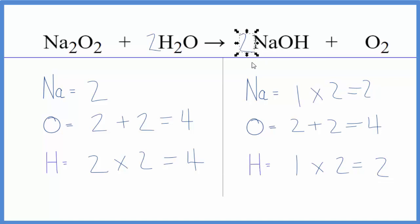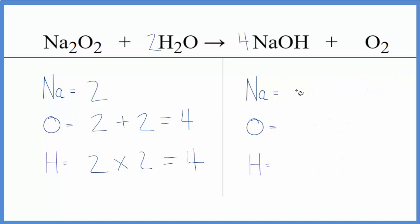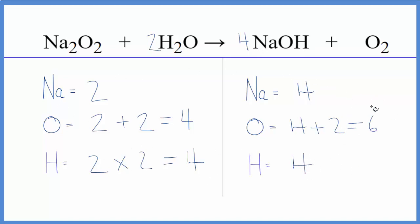So let's do that — put a four here — and now we need to update all of these numbers. We have four times one: four sodium atoms, four times one. That's four plus the two out here: six. Four times one gives us four hydrogen atoms, so we have balanced the hydrogens. But now these aren't balanced.